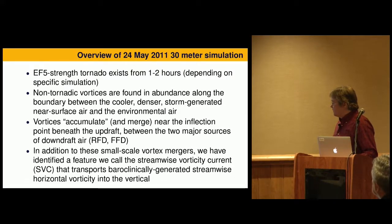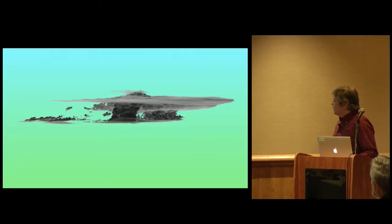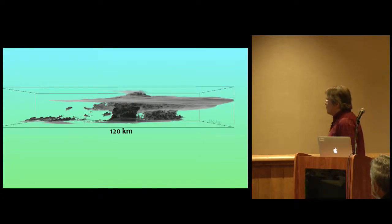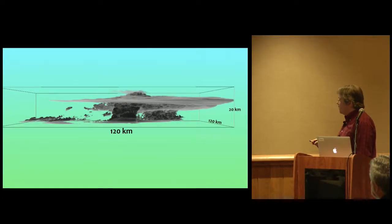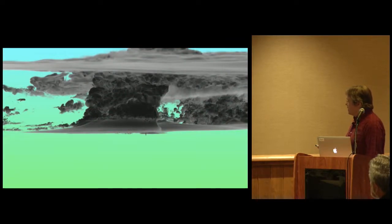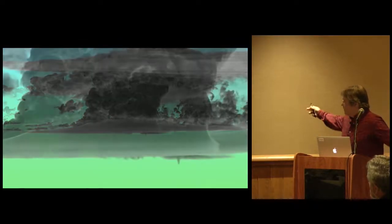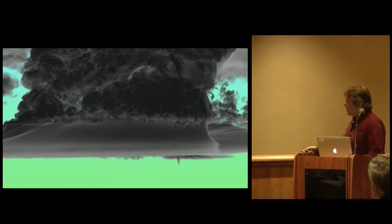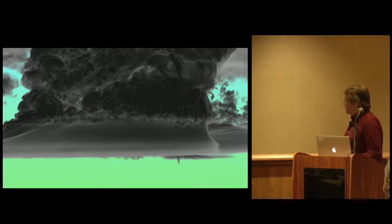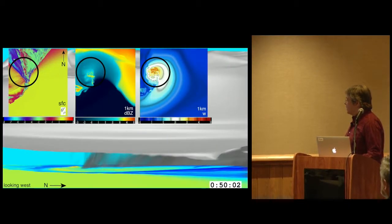We've also identified a feature we call the streamwise vorticity current that seems to be very important in maintaining the storm. Here's a volume-rendered image showing the size of the model domain and giving you a sense of scale. There is a tornado there — and there it is. We run the main simulation over that entire domain at 30-meter isotropic grid spacing. We do stretching on the lateral boundaries and at the top, but this is all 30-meter grid spacing. There is a tail cloud, a tornado, and a wall cloud.